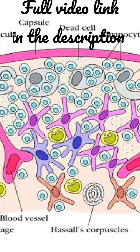Epithelial cells lying deeper in the lobule develop processes and they join with the similar processes of other cells, and they form a reticulum. It may be noted that this reticulum is cellular and has no similarity to the reticulum formed by the reticular fibers in the lymph node and the spleen.